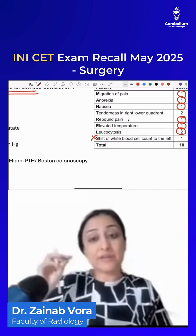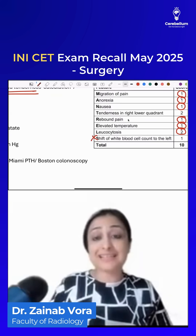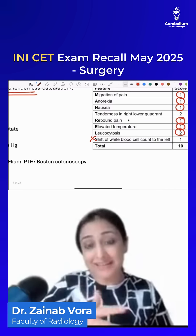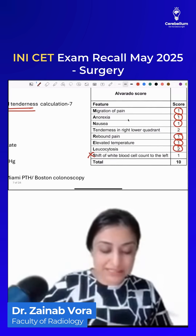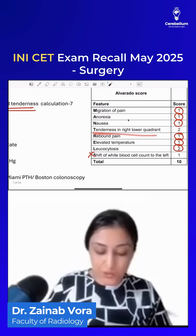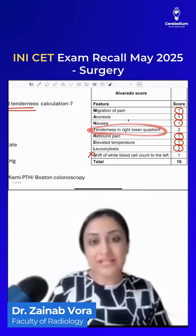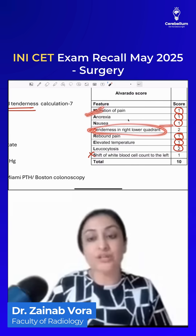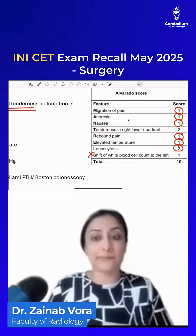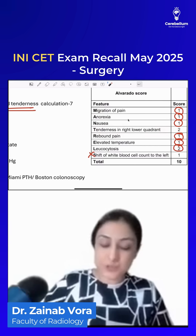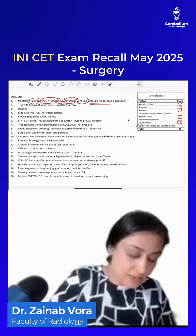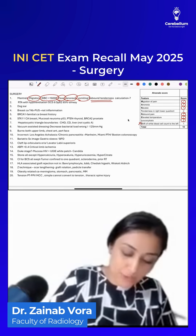If it was rebound tenderness it is one, if there was localized tenderness it was two. But because they have mentioned migratory pain, I believe this would not have been localized — it makes no sense, because they are saying migratory, so it would not have been localized. This is why the score becomes one, two, three, four, five, six, seven.